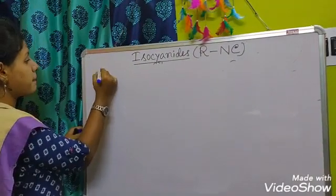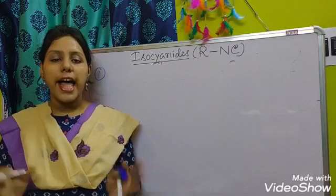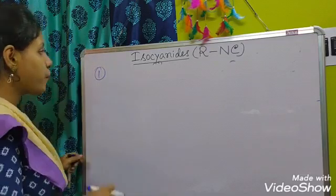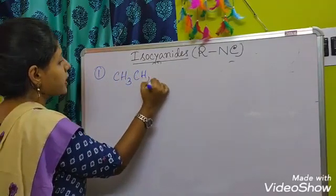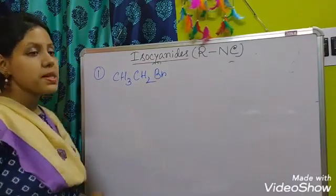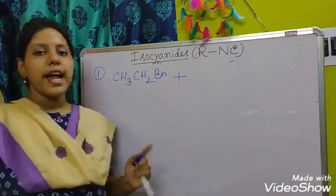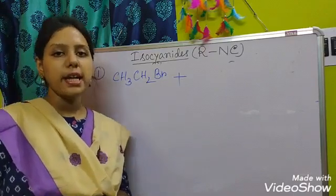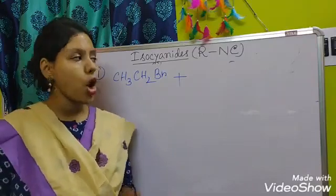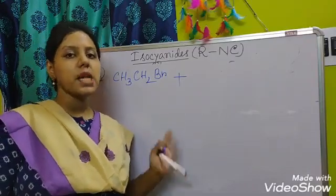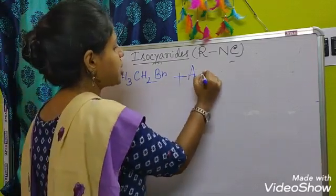Now we will see the preparation methods of isocyanides. The first method: we can prepare isocyanides from alkyl halides. Taking an alkyl halide like CH₃CH₂Br, that is ethyl bromide. In the case of cyanides we used an alcoholic solution of sodium or potassium cyanide, but in this case we have to use an alcoholic solution of silver cyanide, that is AgCN.